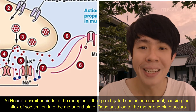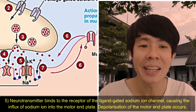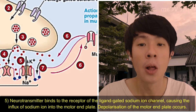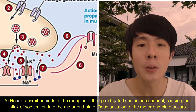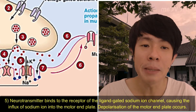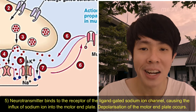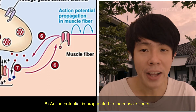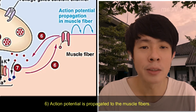The neurotransmitter then binds to the receptor of the ligand-gated sodium ion channels, causing the influx of sodium ions into the motor end plate. Depolarization of the motor end plate occurs. Finally, action potential is propagated through the muscle fibres.